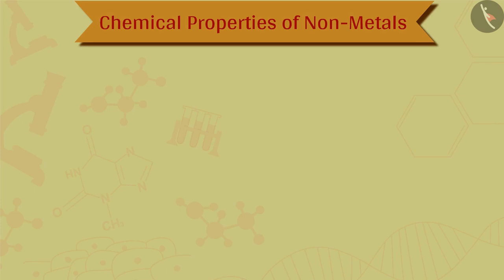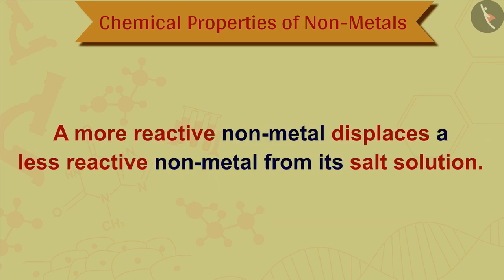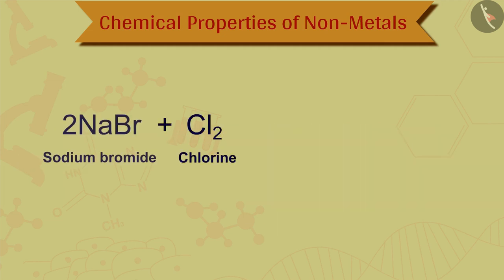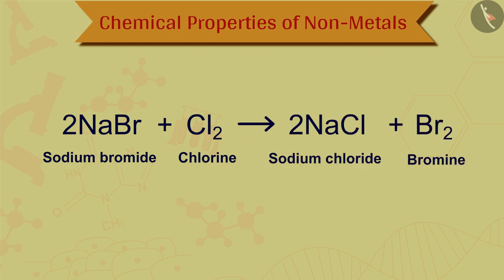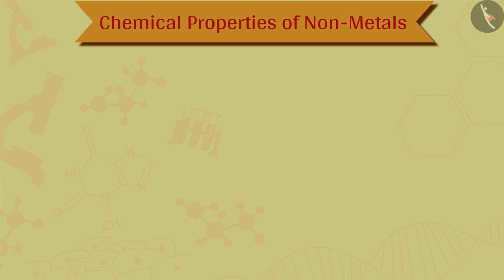The next reaction is the reaction of nonmetals with salt solutions. A more reactive nonmetal displaces a less reactive nonmetal from its salt solution. For example, when chlorine is passed through a solution of sodium bromide, sodium chloride and bromine are formed — a more reactive chlorine displaces the less reactive bromine from its solution.